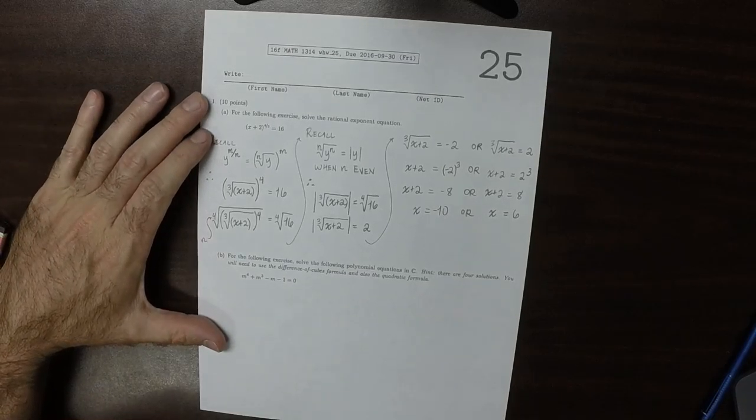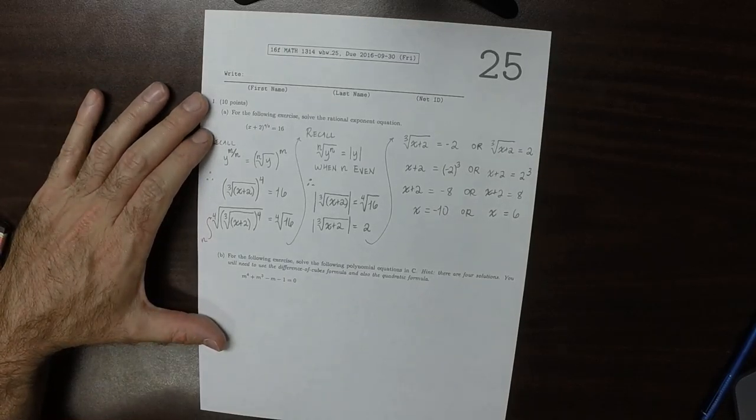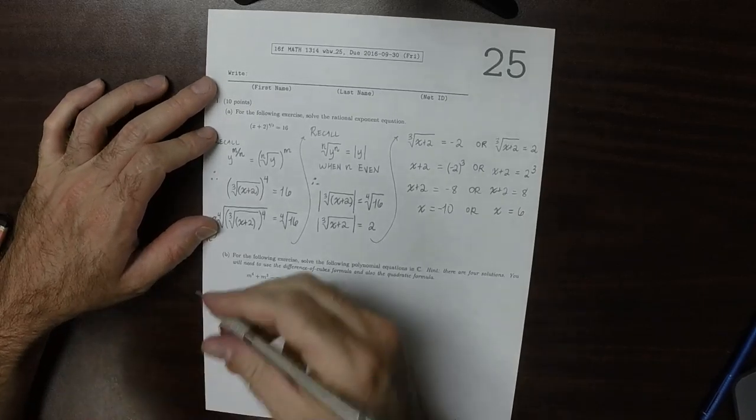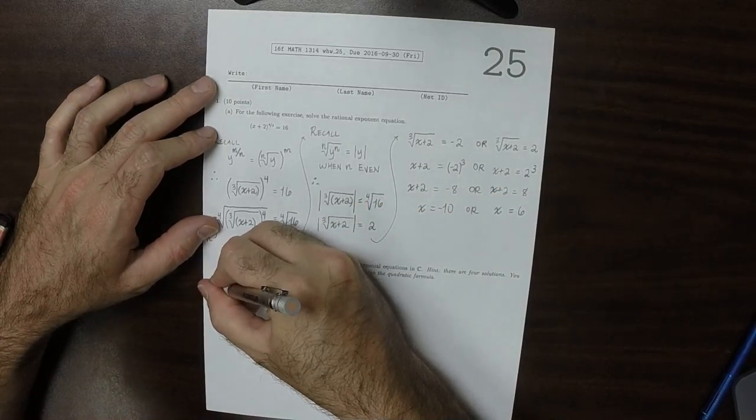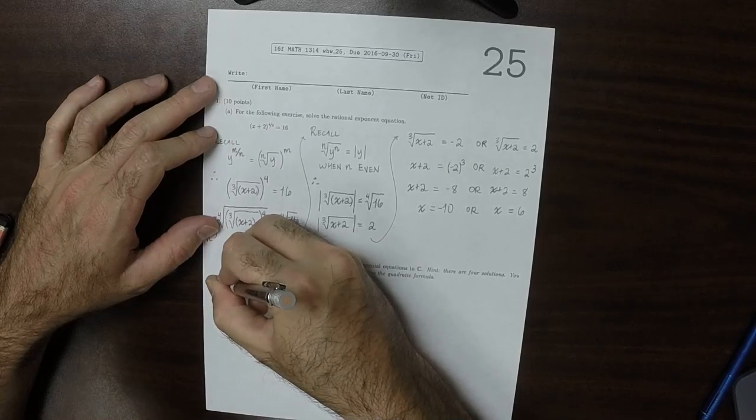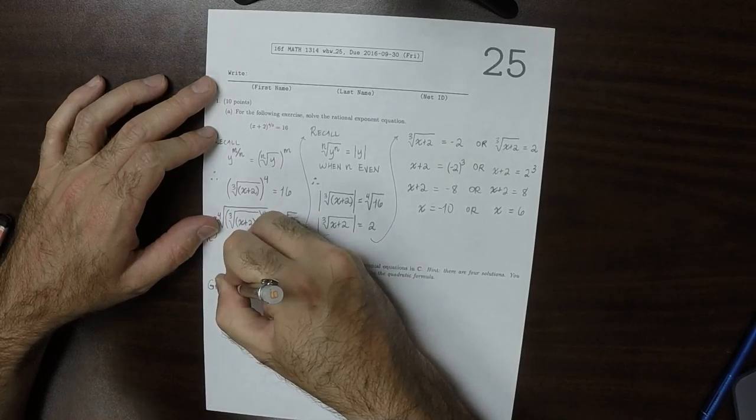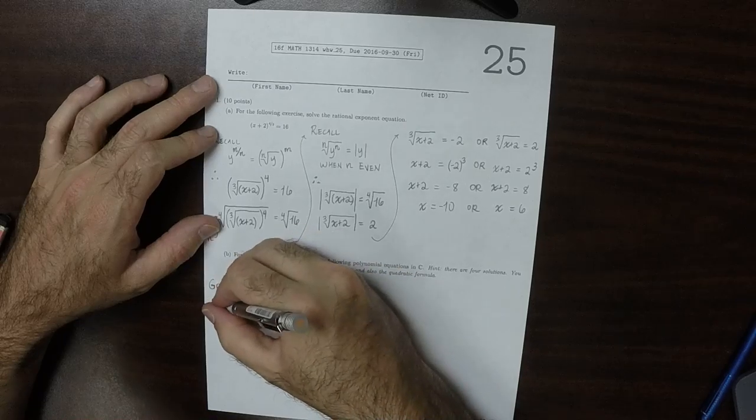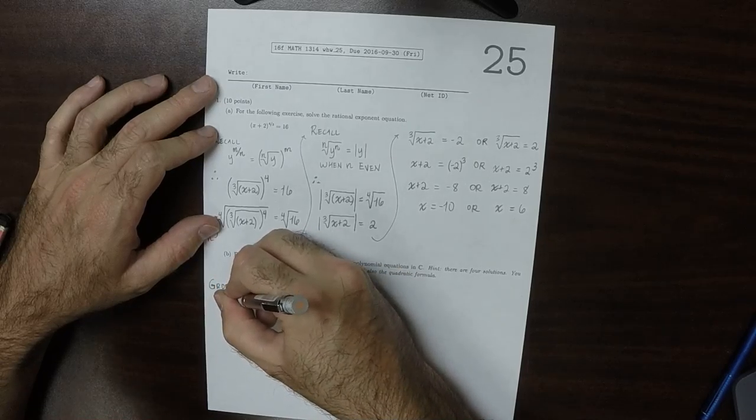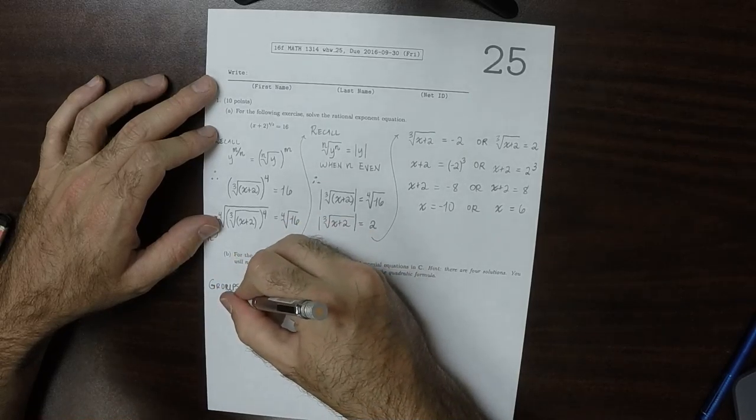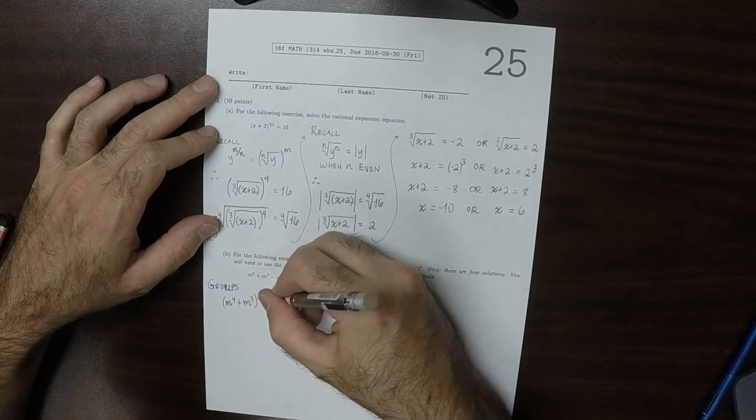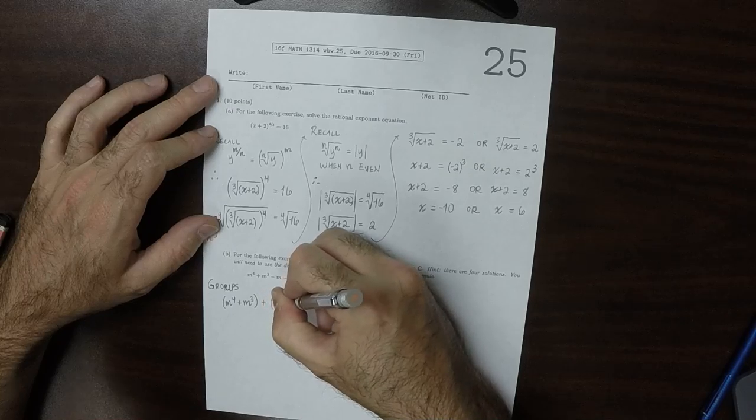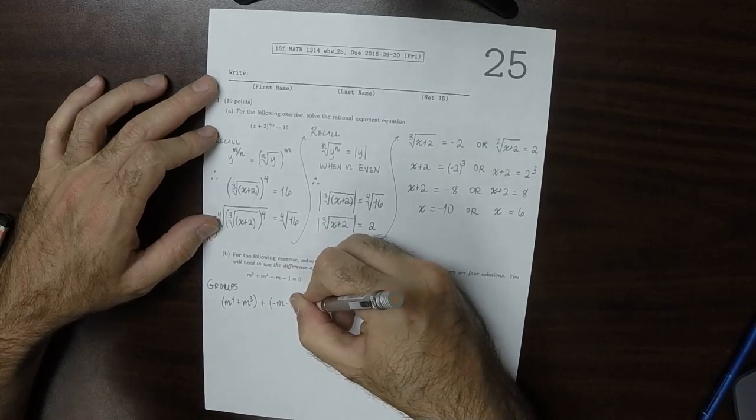Part B. So in part B, we'll form groups. m to 4 plus m to 3, and then plus negative m minus 1 equal to 0.